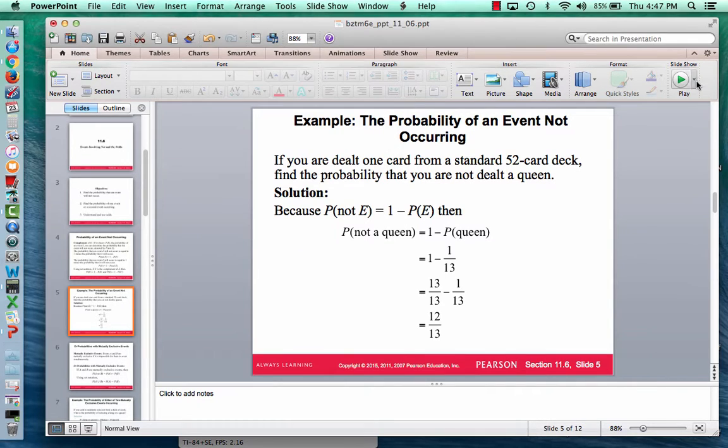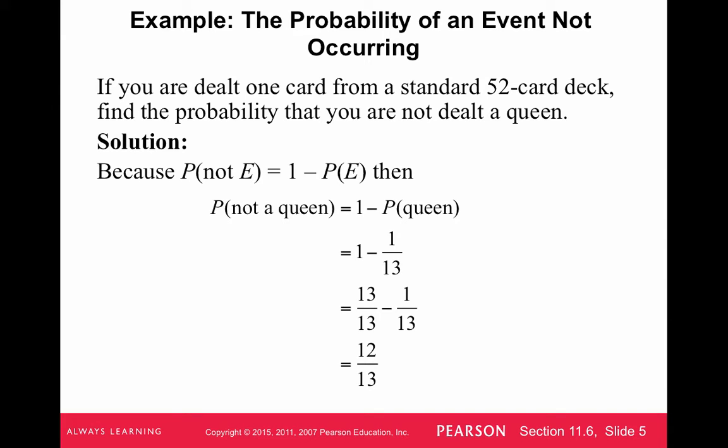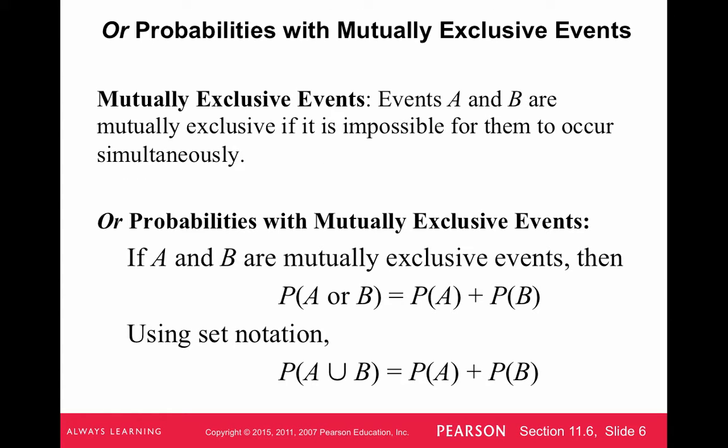Let's continue. Now, OR probabilities. Let's find the probability using the word OR with mutually exclusive events. So what are mutually exclusive events, sometimes called disjoint events? Events A and B are mutually exclusive if it is impossible for them to occur simultaneously.